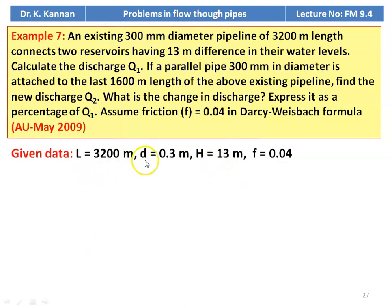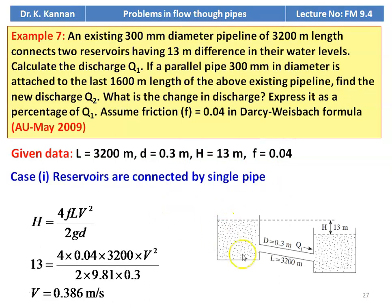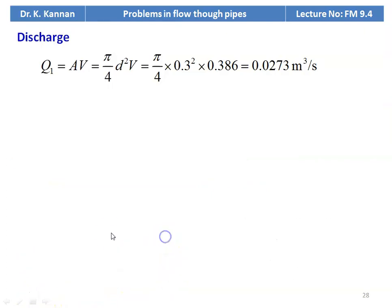The data: length = 3200 m, diameter = 0.3 m, height difference = 13 m, friction factor F = 0.04. For the single pipeline: H = 4FLV²/2GD, so 13 = 4 × 0.04 × 3200 × V² / (2 × 9.81 × 0.3). Solving, velocity V = 0.386 meters per second. Discharge Q1 = A × V = π/4 × 0.3² × 0.386 = 0.0273 meter cube per second.